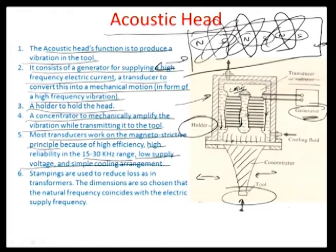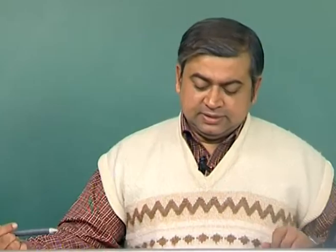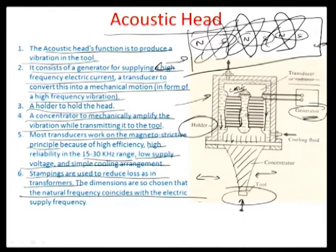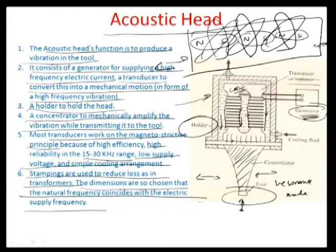Losses are reduced by laminated stampings (similar to transformers) with adhesive bonding between layers to limit eddy currents. The dimensions are chosen so the natural frequency coincides with the electrical supply frequency, operating in resonance mode. Vibrations from the magnetostrictive material are first concentrated by the concentrator, and operating in resonance means large amplitudes for small generator signals — enabling full utilization of generator power.